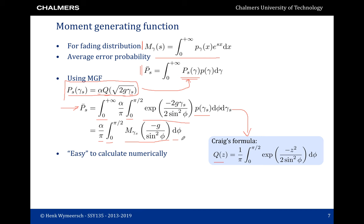It may seem like we haven't gained much — we've just replaced one integral with another. However, the second integral can typically be evaluated easily numerically, mainly because the integration boundaries are now finite, going from 0 to pi over 2 rather than from 0 to plus infinity. So this is an integral that is easy to compute.